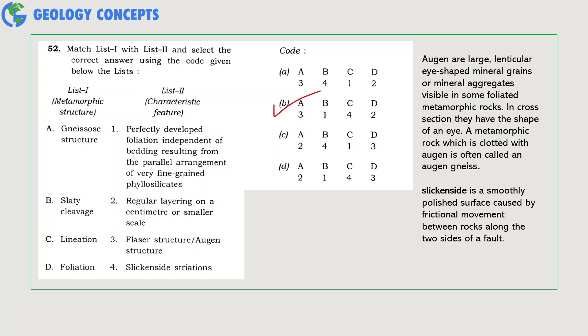This question asks us to match the metamorphic structure with their respective characteristic features. Augens are large lenticular eye-shaped mineral grains or mineral aggregates visible in some foliated metamorphic rocks. A metamorphic rock which is dotted with augen is often called an augen gneiss. So A matches with 3 from list 2. Slickensides is a smoothly polished surface caused by frictional movement between rocks along the two sides of a fault. They are generally in form of lineation, so C matches with 4 from list 2. As option B contains this combination, it is the right answer.